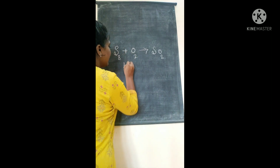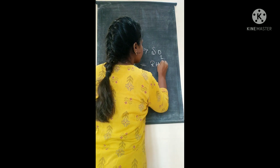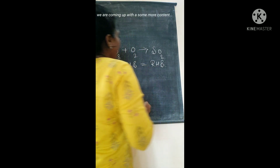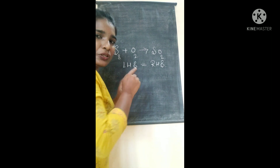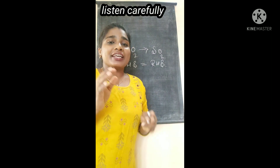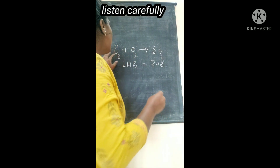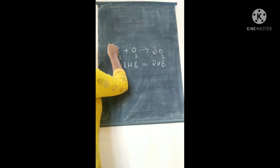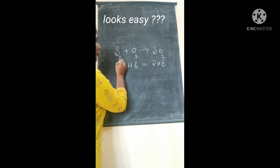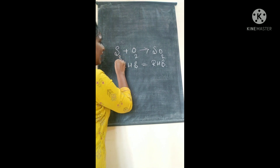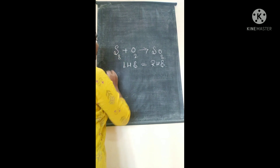That means the left-hand side should be equal to the right-hand side. One thing you should know: we can change only the coefficient, not the subscript. The coefficient is what comes before the atom. The subscript is what comes after the atom, written below it.